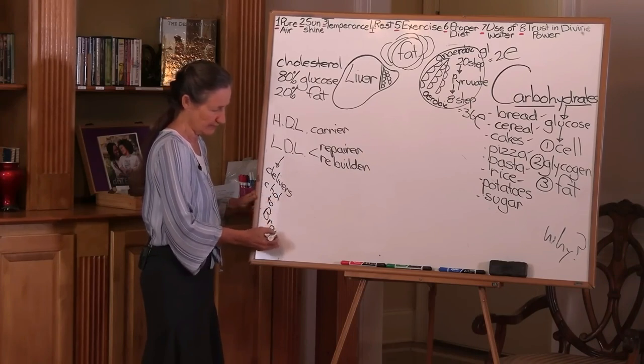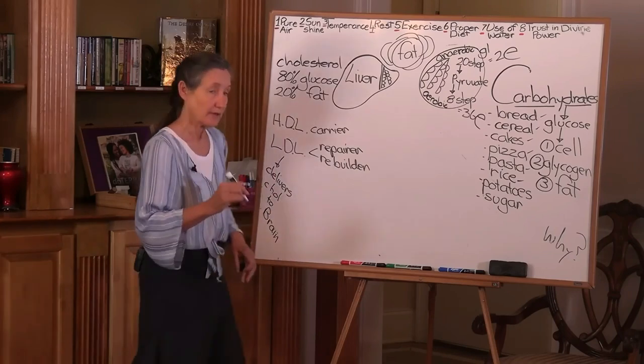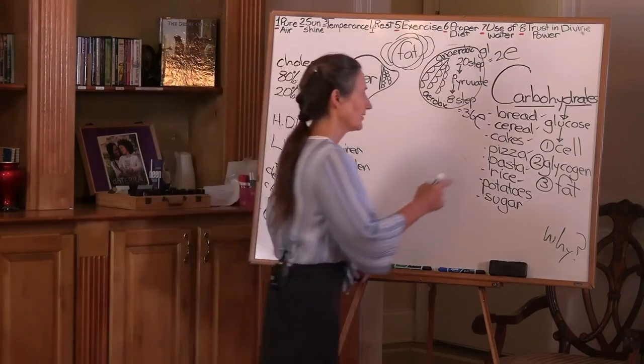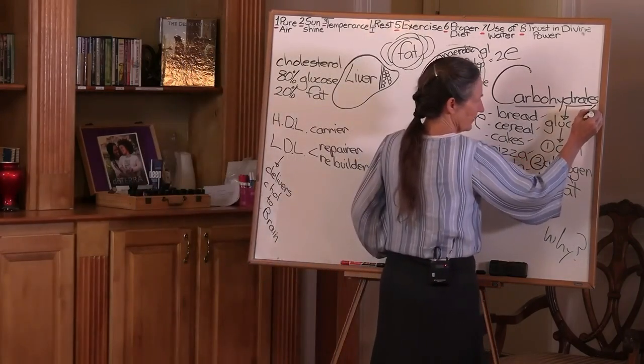Now let me show you something briefly. We're going to look at this in further detail later. Glucose burns at four calories per gram.